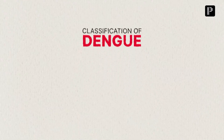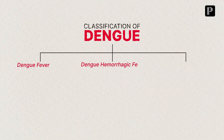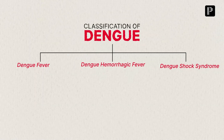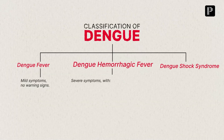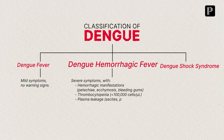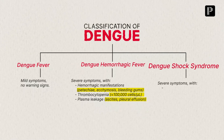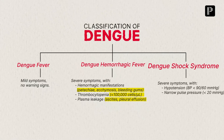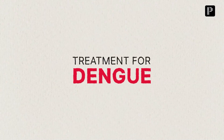Dengue can be classified into three categories: Dengue Fever, Dengue Hemorrhagic Fever, and Dengue Shock Syndrome. Dengue Fever usually presents with mild symptoms and no warning signs. Dengue Hemorrhagic Fever is more severe with features like hemorrhagic manifestations, thrombocytopenia, and plasma leakage. Dengue Shock Syndrome is a critical condition characterized by hypotension and narrow pulse pressure.